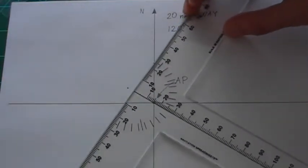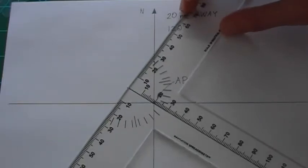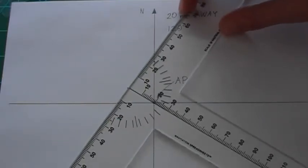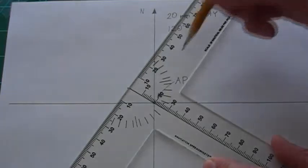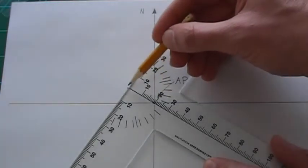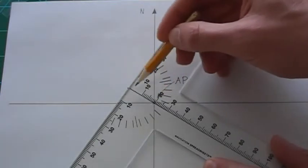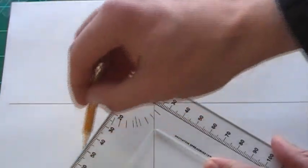So we can now complete the plotting of the LOP by connecting the assumed position and this intersection along the azimuth line of the t-plotter and plot our LOP.